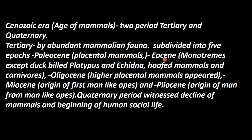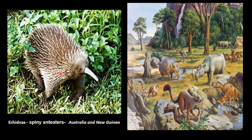Among the monotremes, the ones still available and living today are the platypus and echidna. The echidna is also known as the spiny anteater — it eats termites and is seen in Australia, New Guinea, and other places.